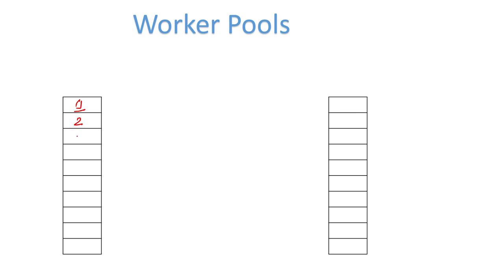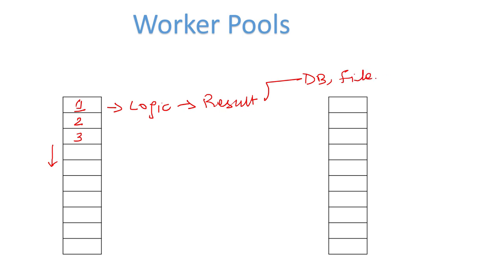Let's understand the problem: we have a number of tasks — task 1, task 2, task 3 — and we want to apply some logic or actions that will produce a result. One strategy is to go in a serial manner: we pick up task 1, apply some logic, and that produces a result which we store in a database, a file, push to S3, or give to a third party. After finishing the first task we move on to the second, then the third, and so on.